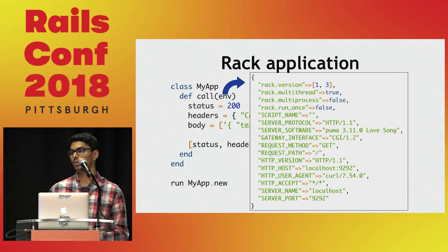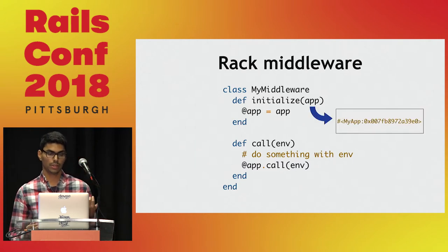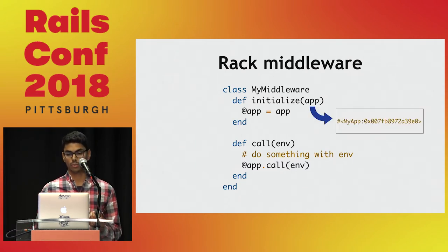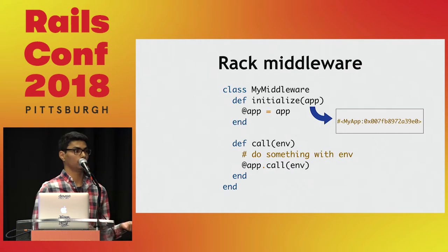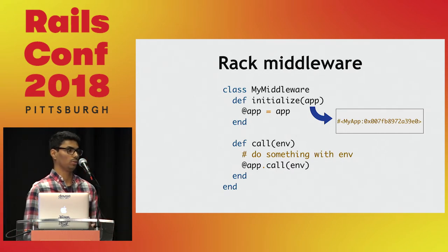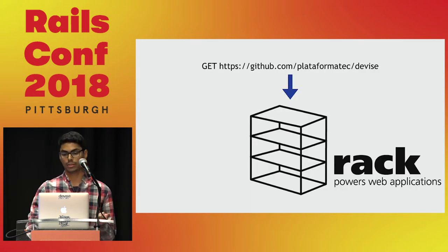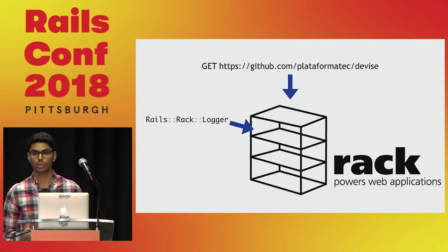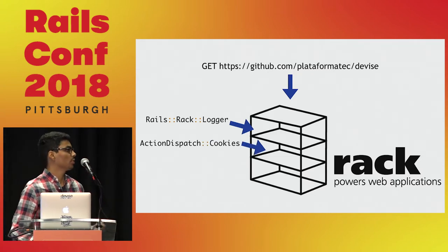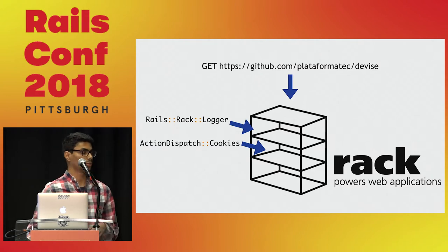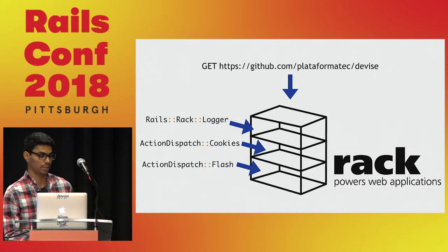Warden is a Rack middleware, and a middleware looks like a Rack application, but it receives a Rack application instance. This allows us inside the call method to change the environment hash in some way and pass this new version to the Rack application. A middleware can process the request in some way, and a request can be processed by multiple middlewares. For example, a logger middleware can read the environment hash and log it to a file, a cookies middleware can add a Set-Cookie header to the response, and there's also a middleware that handles flash messages.